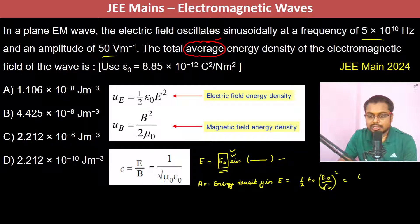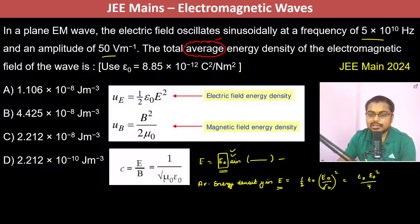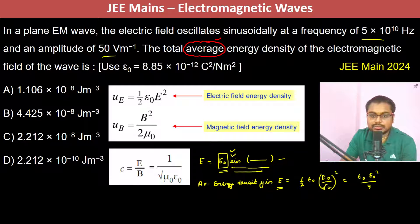So therefore it is actually epsilon naught E naught square by 4. This is the average density in electric field. Since the electric field is not uniform in the case of electromagnetic wave, it's a sinusoidal function, so therefore it is not uniform.